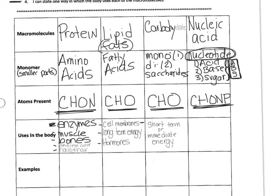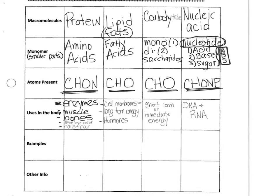Carbohydrates provide short-term or immediate energy. This is why athletes have pasta parties before a big meet or game — carbohydrates give your body the quick energy it needs. Finally, nucleic acids are used to build your DNA and RNA, which are the instructions for your body to do pretty much everything. For now, just know that nucleic acid is a macromolecule, its monomers are nucleotides made up of CHOMP (C-H-O-N-P), and its function is to make your DNA and RNA.